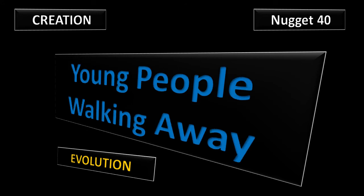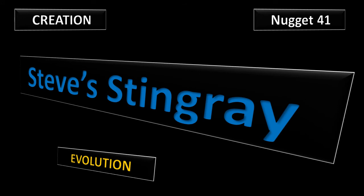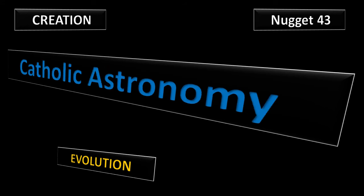Nugget 40: Young people are walking away from the church and from God in droves. Why? And how can you stop it? Nugget 41: Find out about Steve's magnificent stingray, a living fossil. Nugget 42: The Nebula Illusion. Are the pictures that we see of these beautiful nebulas CGI, Photoshop, or real? Nugget 43: Learn about a very influential Catholic astronomer.